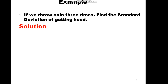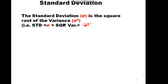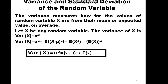We will take the same example from our last lesson about the expected value. If we flip a coin three times, we want to find the standard deviation of getting heads. The random variable here is the number of heads. We already found the expected value in the last lesson, which was 1.5.